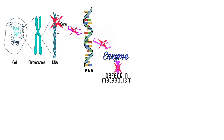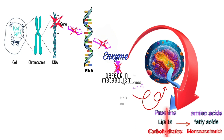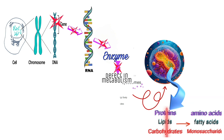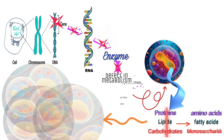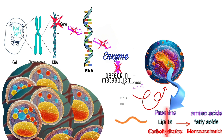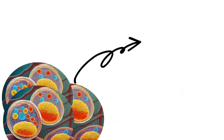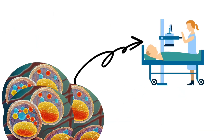If one of these enzymes, which are responsible for breaking down large molecules, is defective due to mutation, those large molecules accumulate within the lysosomes. The accumulated materials result in an increase in the size and number of these organelles, leading to cellular dysfunction and pathological features.